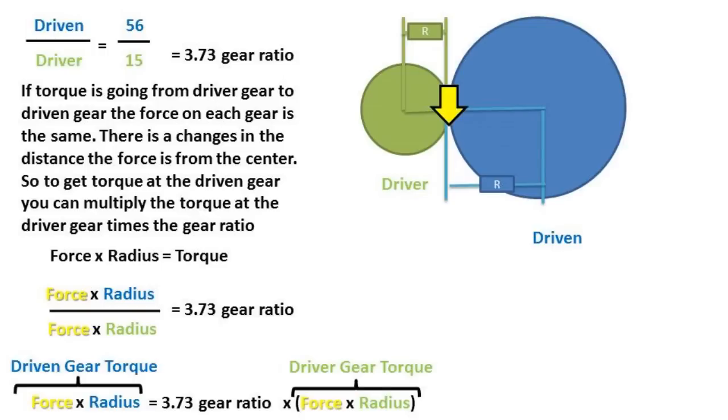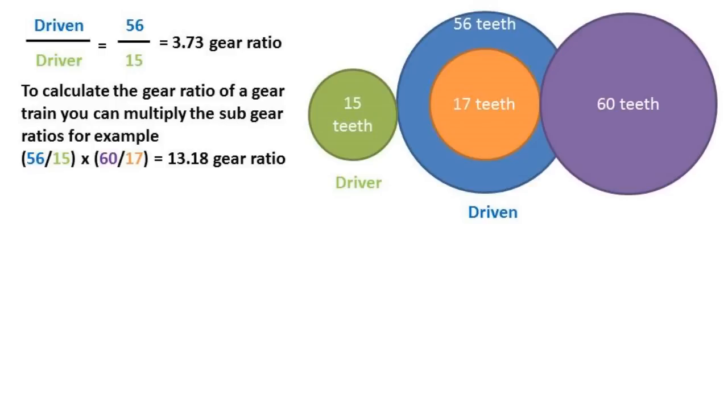Doing some rearranging of formulas, we get that taking the torque at the driver gear and multiplying it by the gear ratio results in the torque at the driven gear. To finish off this video, let's go over gear trains.